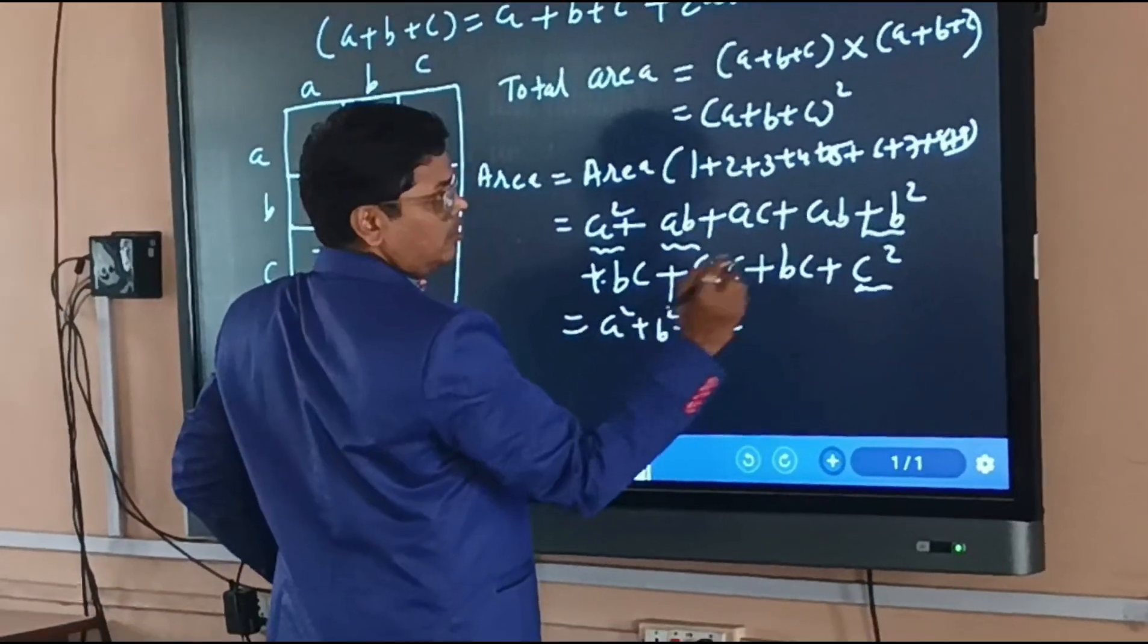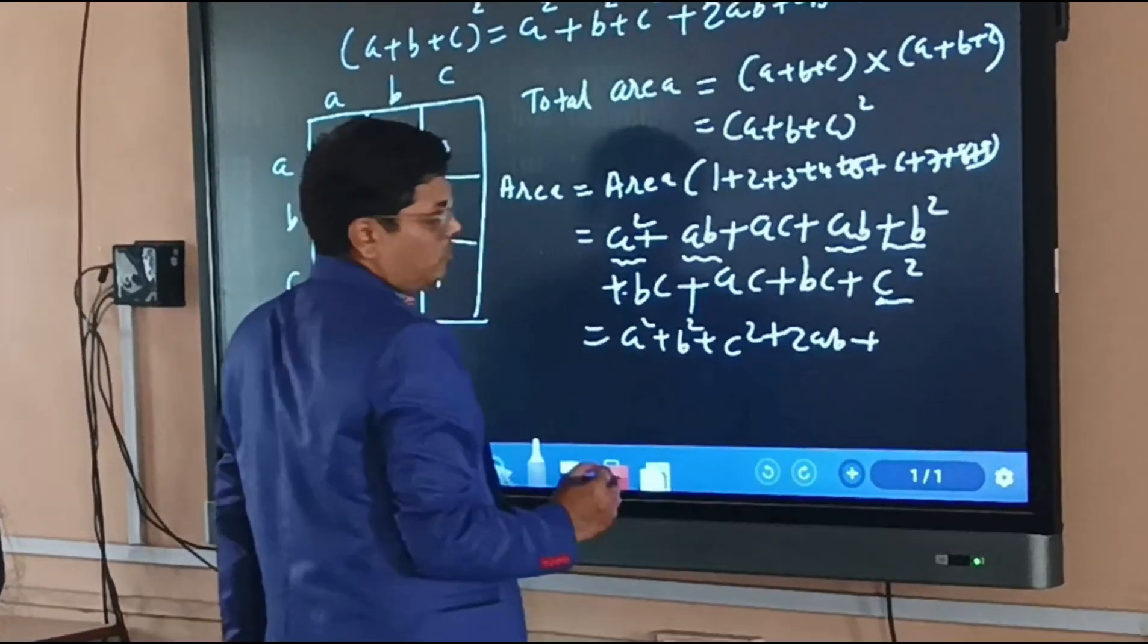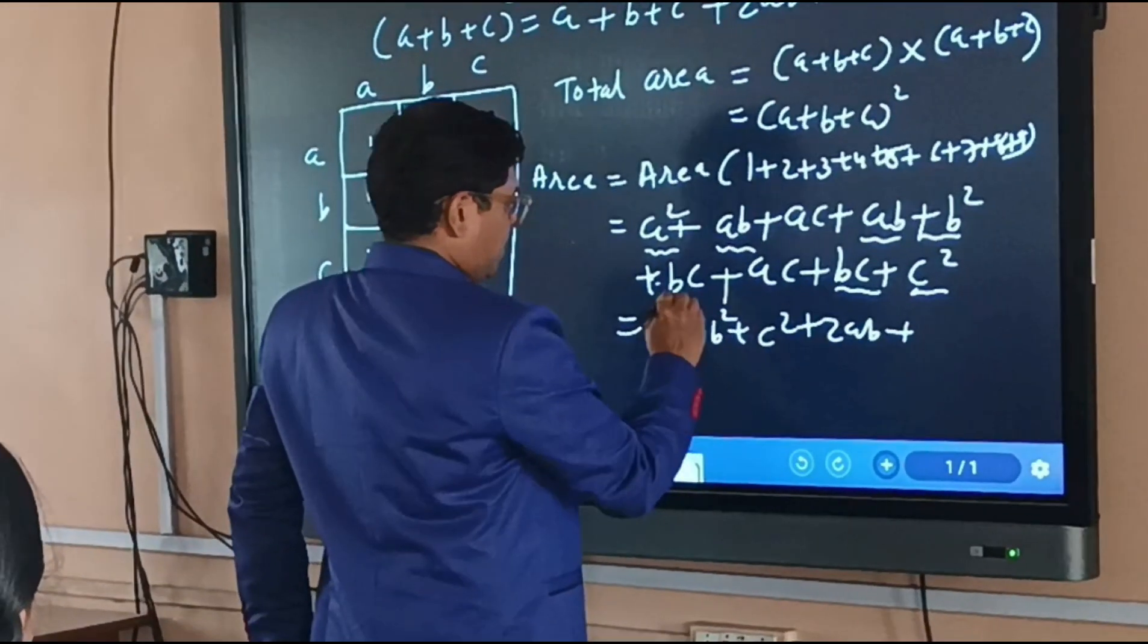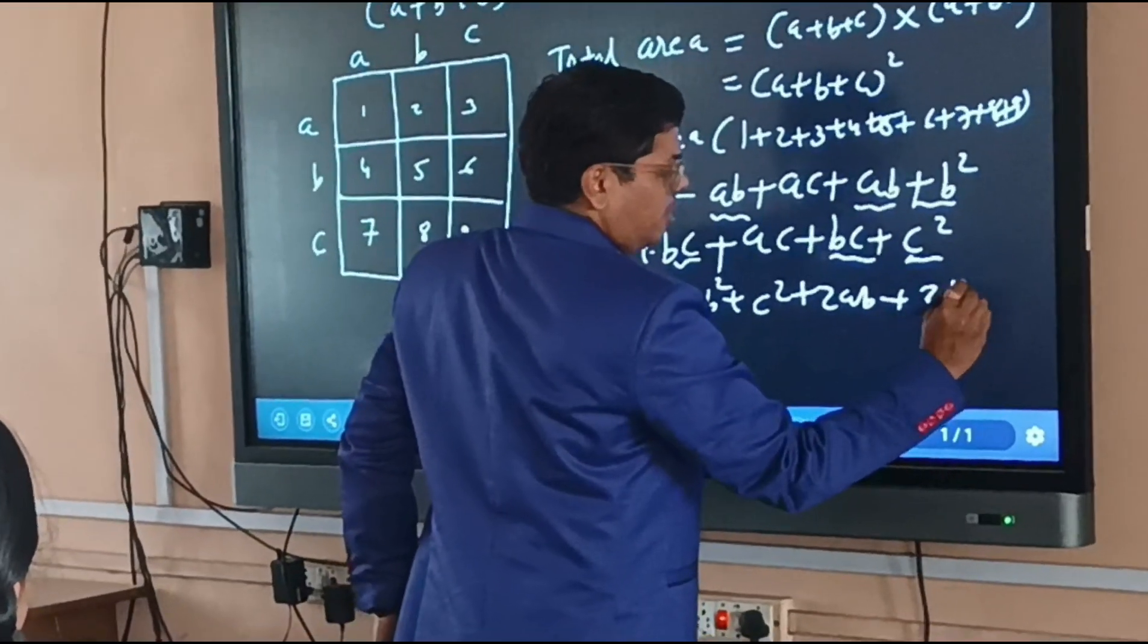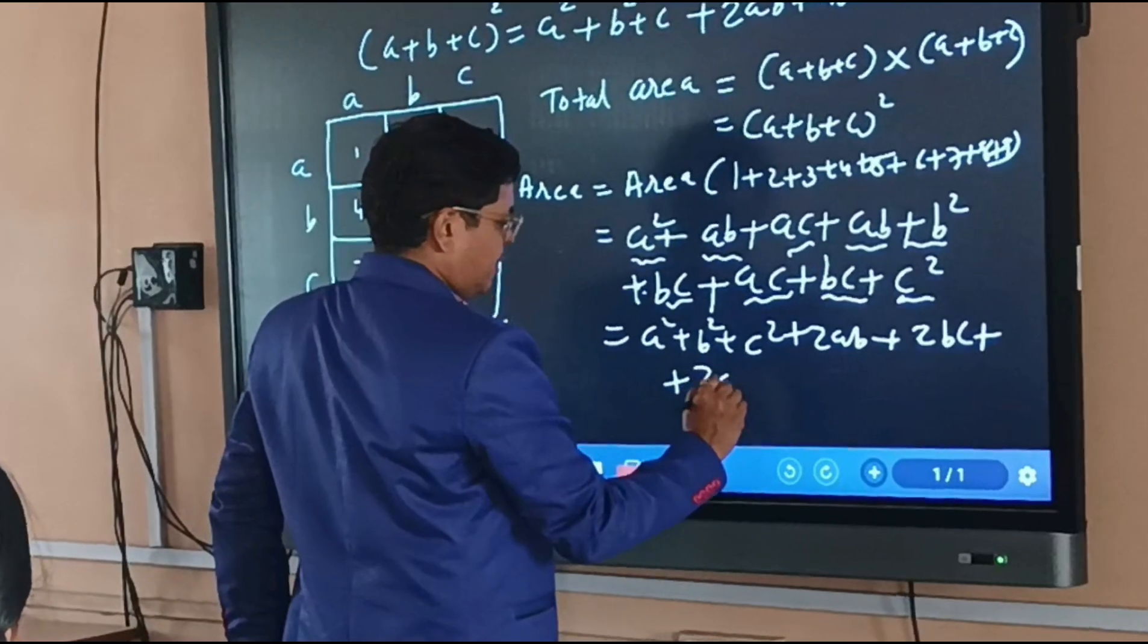Then here ab and another ab, so we get two ab. Another we have bc plus bc, that is two bc. And the third is ac and another ac, that is two ac.